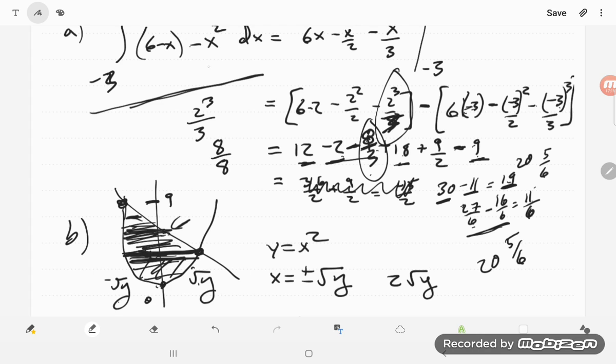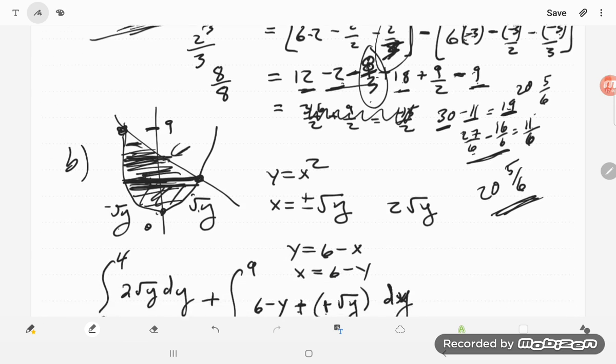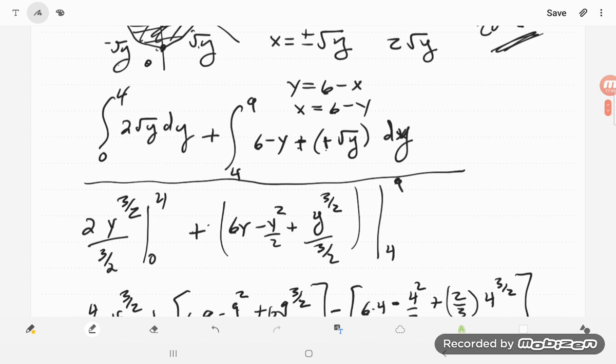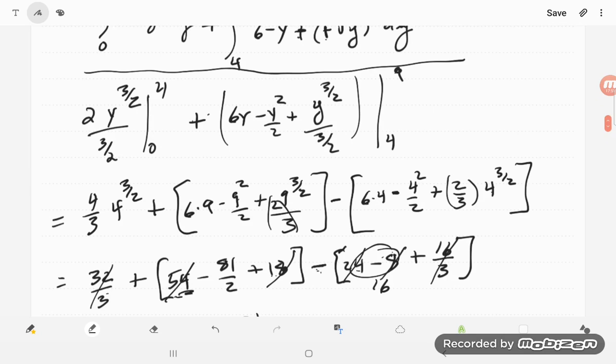So it was set up well but not executed well. I made that transposition error, instead of writing 8 over 3 I wrote 8 over 8. Yeah, that's where like I say technology does definitely better with the calculation part of it, we do better with the setting up. So we should get 20 and 5 sixths in both, the important thing is that the integrals were set up correctly and I'm just not good with numbers.